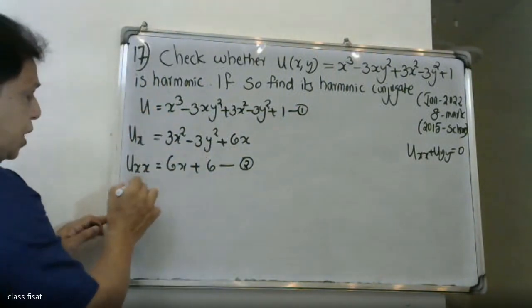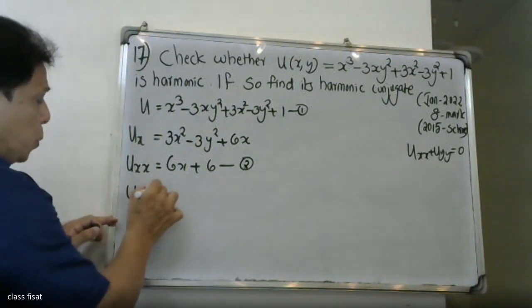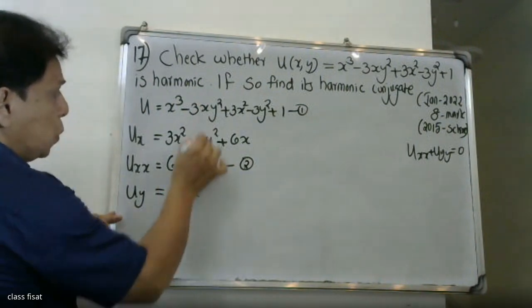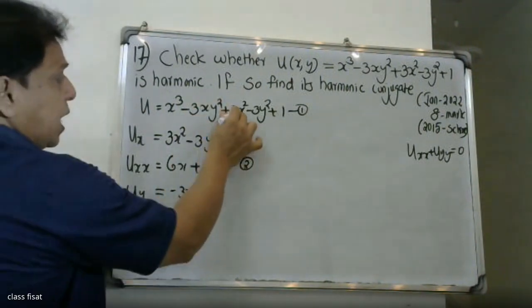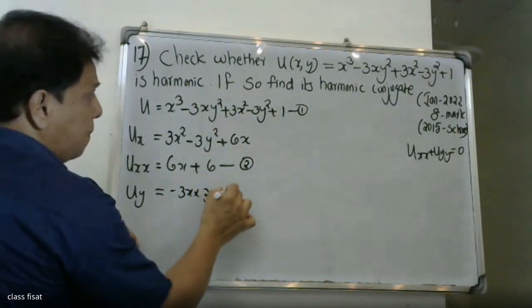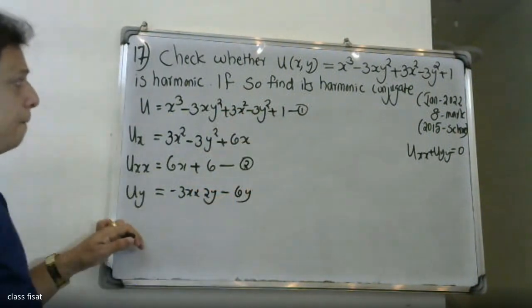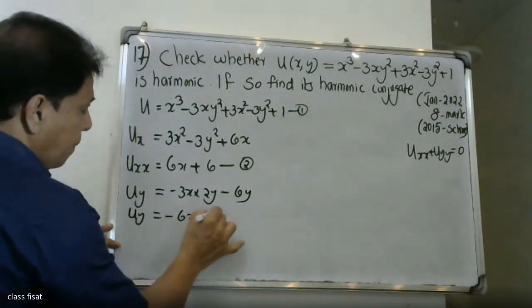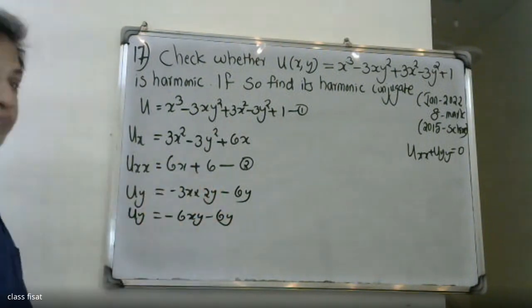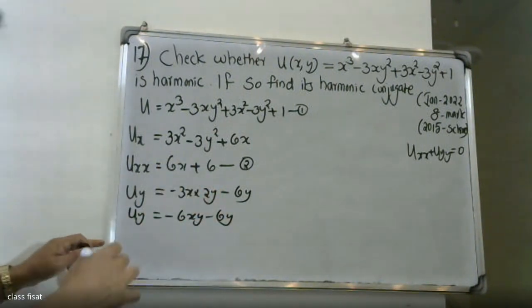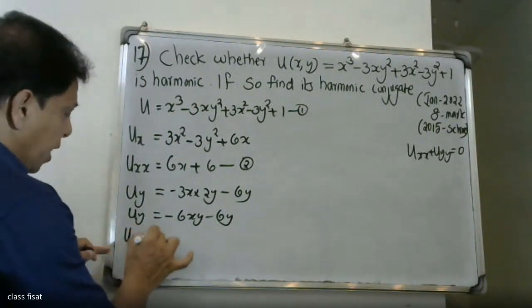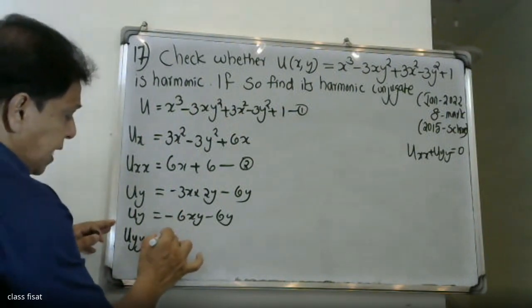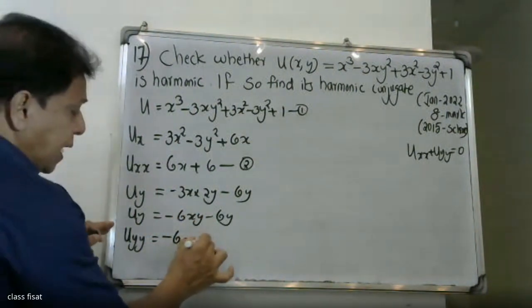Differentiating u with respect to y: uy = minus 6xy minus 6y. Differentiating uy again with respect to y: uyy = minus 6x minus 6.